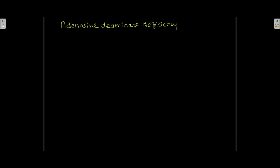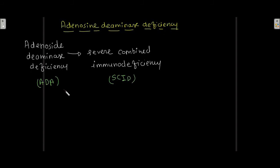Adenosine deaminase (ADA) deficiency leads to severe combined immunodeficiency (SCID). ADA stands for adenosine deaminase, and its deficiency results in this condition abbreviated as SCID.